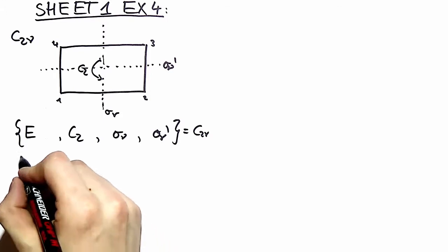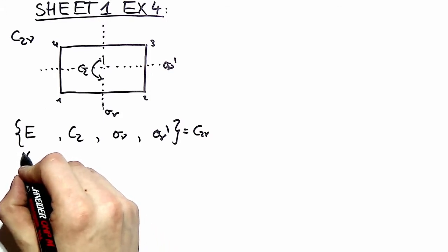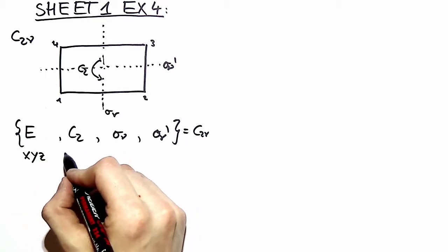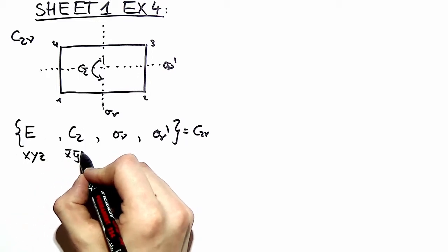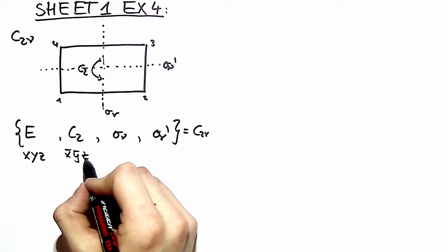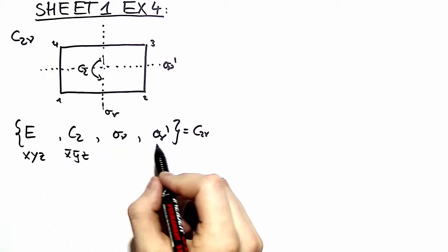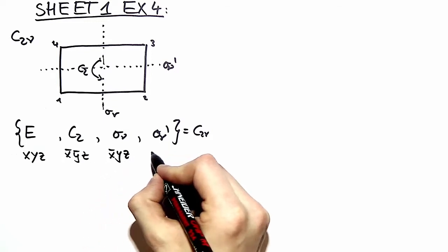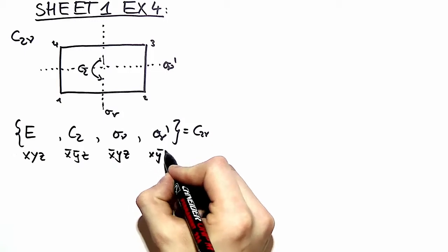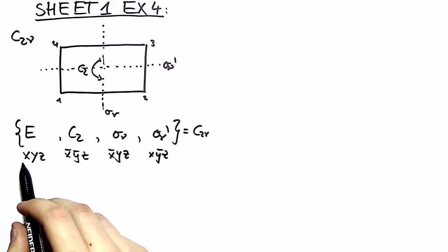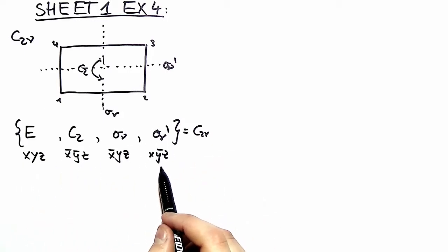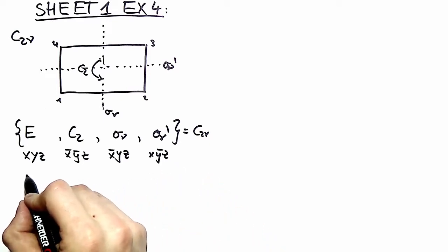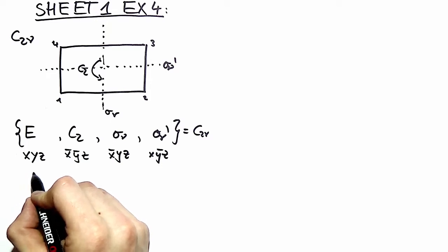We can write down how coordinates transform under the operation X, Y, and Z. C2 negates every coordinate but the Z coordinate, and the two mirror planes we take only one coordinate and invert it. With this representation we can look up in table 1.1 and find the corresponding symmetry operations in the OH group.